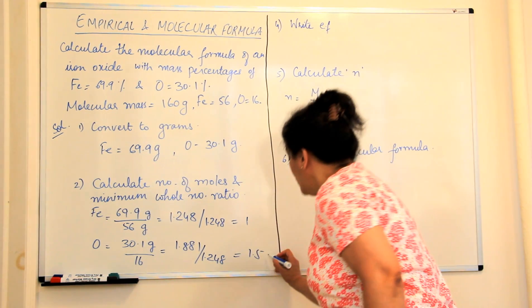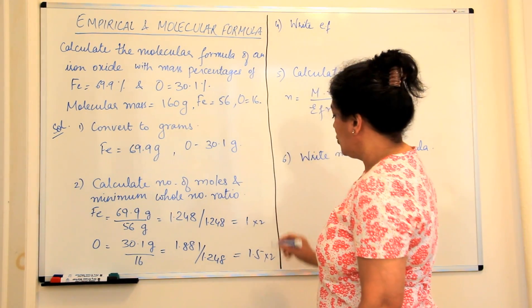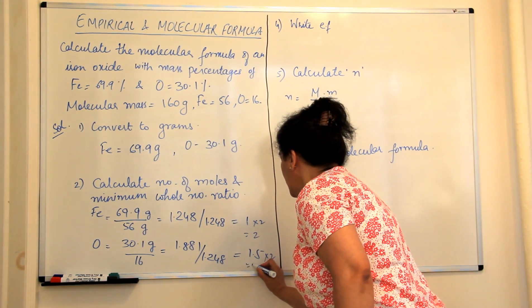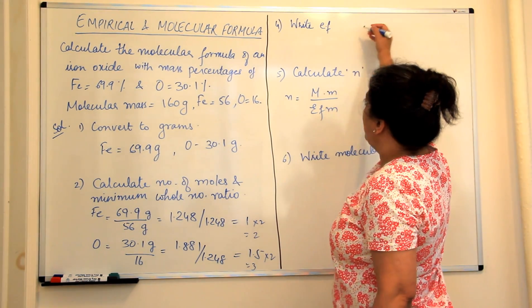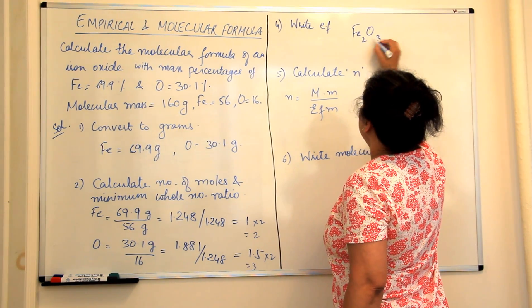So that is what we do. We multiply now both of them by 2. So now we get iron is 2 and oxygen is 3. So our empirical formula would be iron is 2, oxygen is 3.